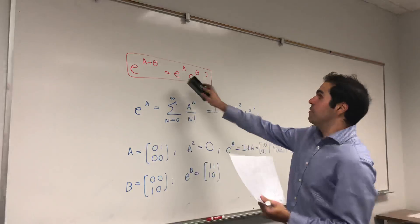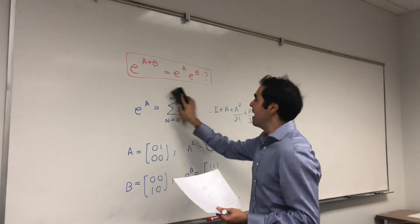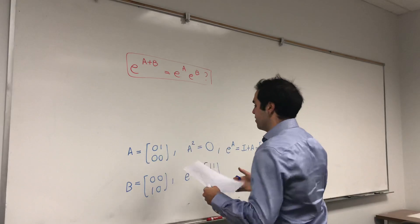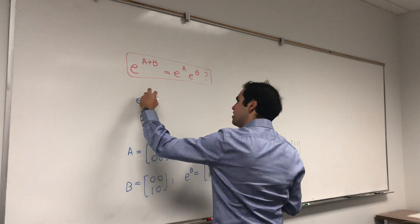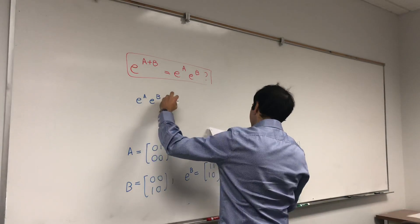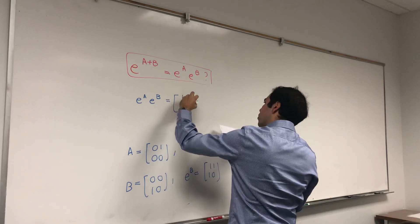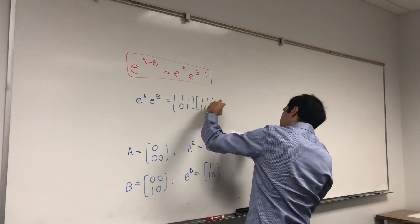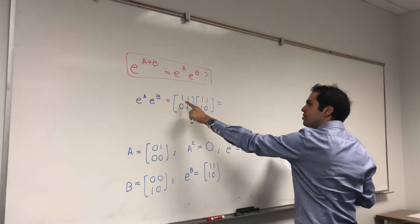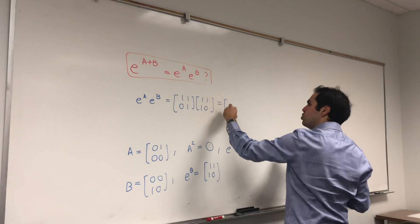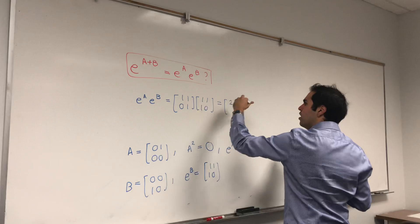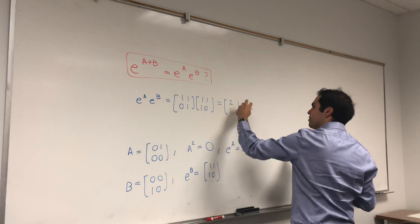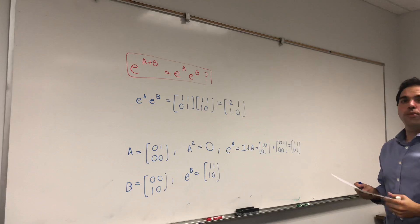Now let's multiply them. On the one hand, let's calculate e to the A times e to the B. So e to the A times e to the B is [[1,1],[0,1]] times [[1,0],[1,1]], and that equals [[2,1],[1,0]].